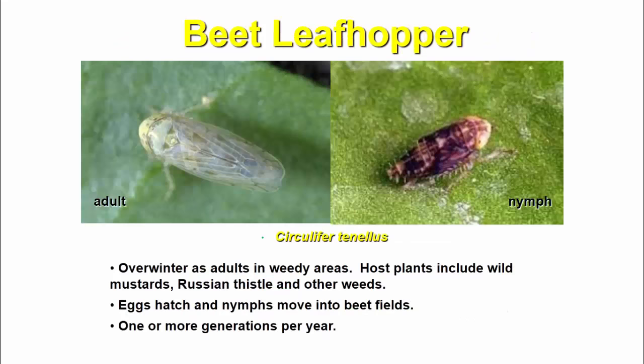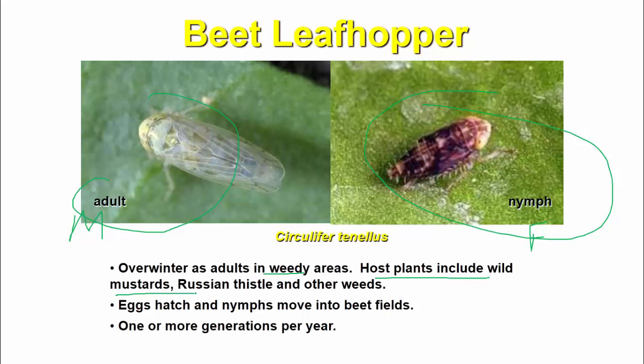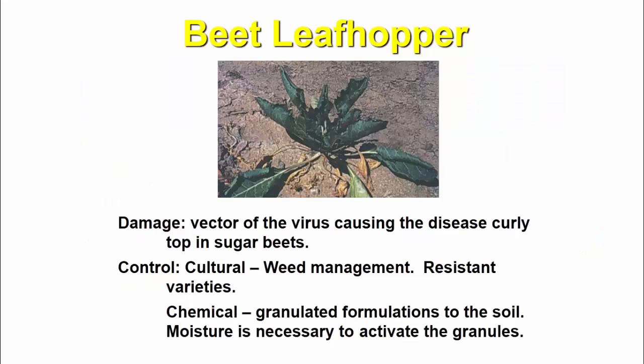Only larval control is recommended: apply granules to the soil in a 4 to 6 inch band over the row. Granules must have moisture to be activated. For the beet leafhopper, the adult and nymph are shown in the figure. They overwinter as adults in weed areas. Host plants include wild mustard, Russian thistle, and other weeds. Eggs hatch and nymphs move into the beet field, with one or more generations per year.